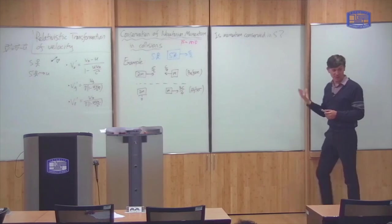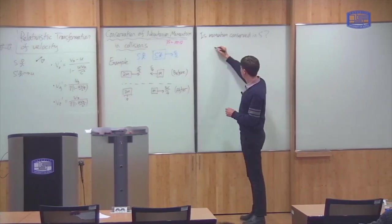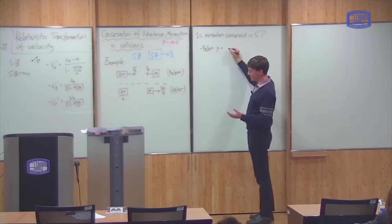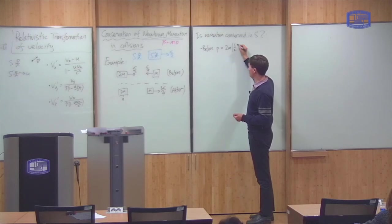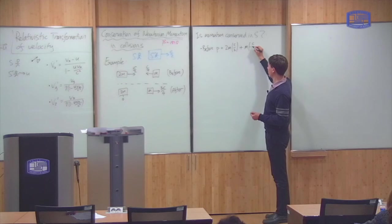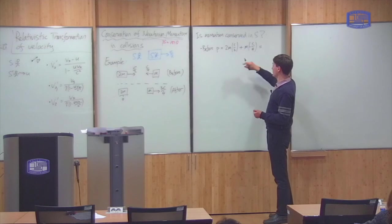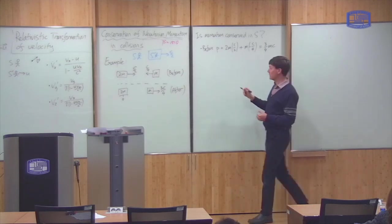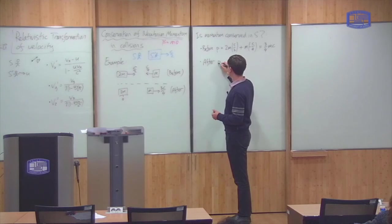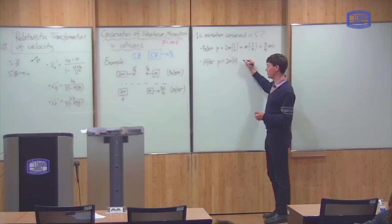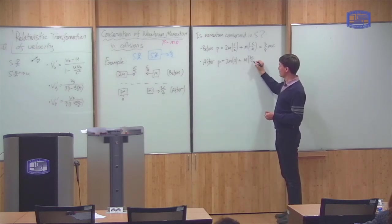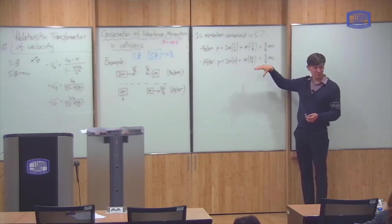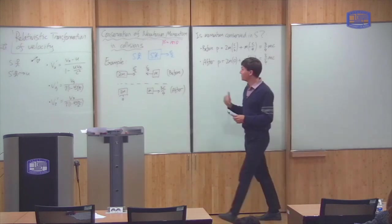Does the S-observer measure the same value for momentum before and after the collision? The total momentum before is 2m × (c/2) + m × (−c/4) = mc − (1/4)mc = (3/4)mc. After the collision, it's 2m × 0 + m × (3c/4) = (3/4)mc. The momentum before equals the momentum after, so momentum is conserved. The answer is yes.